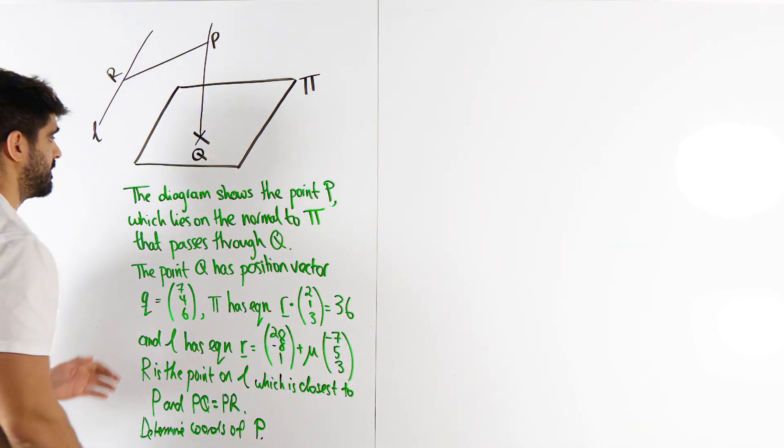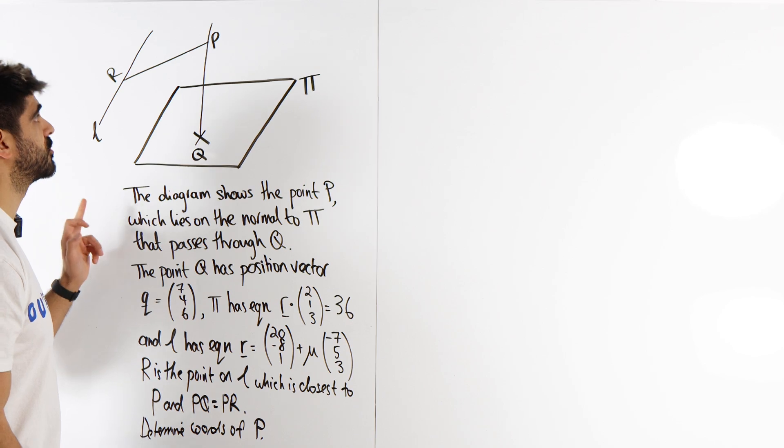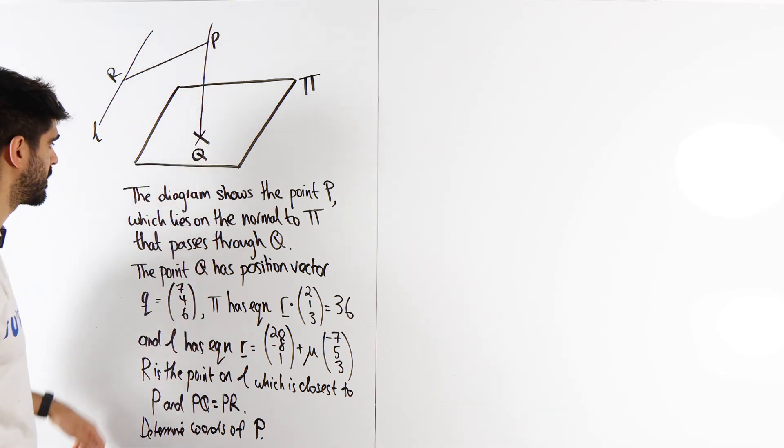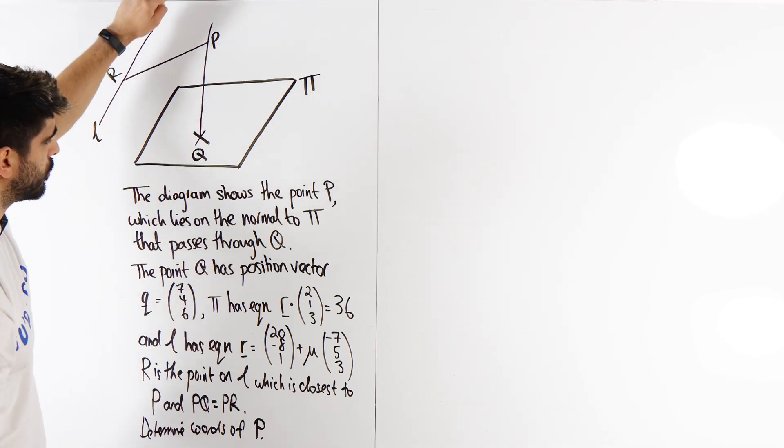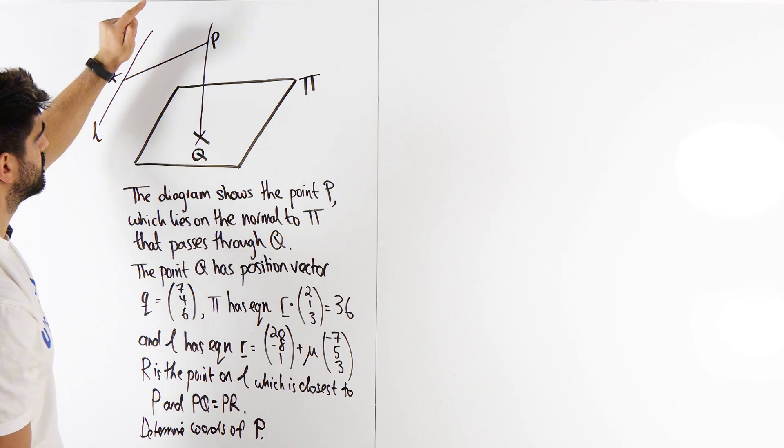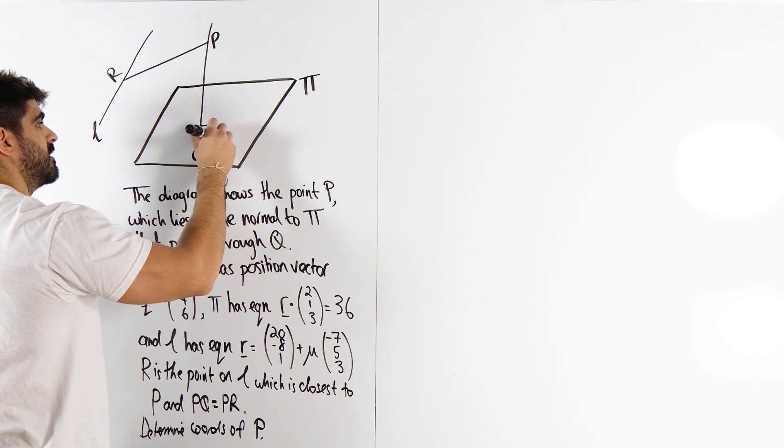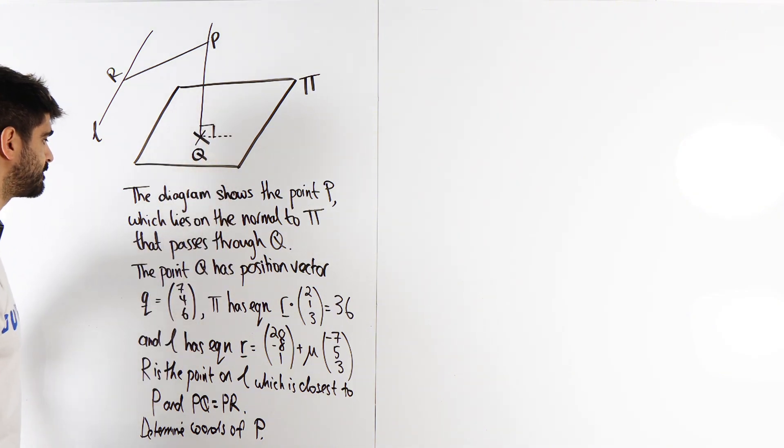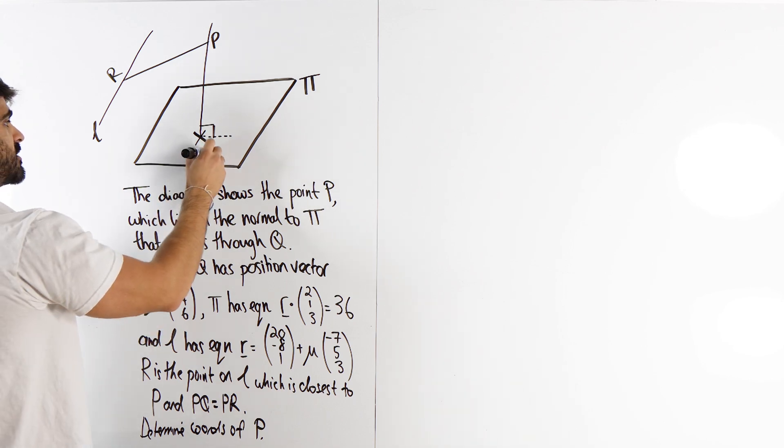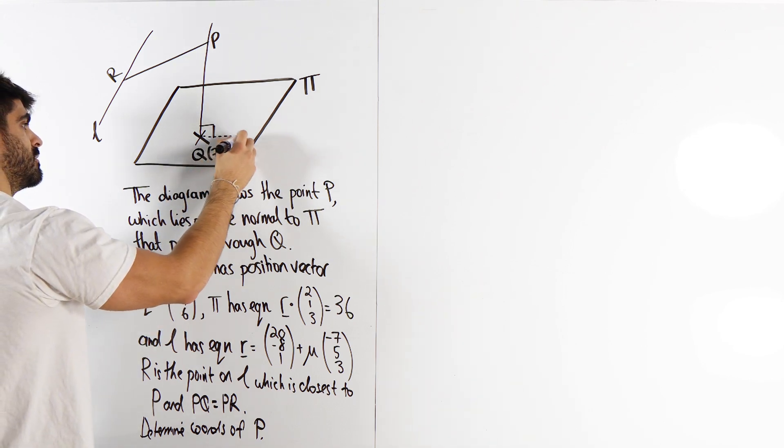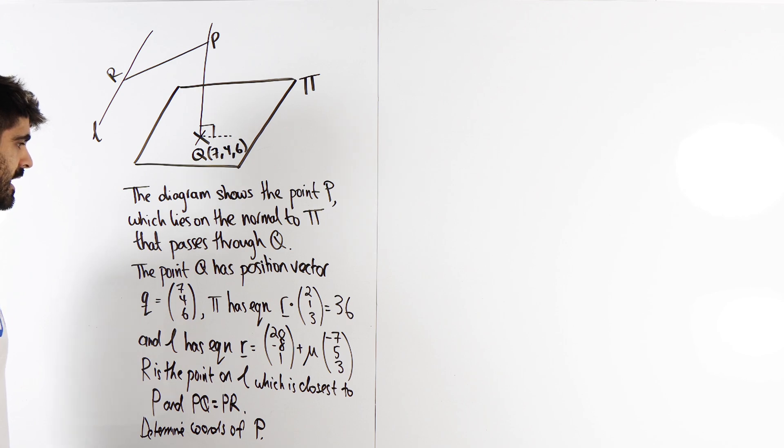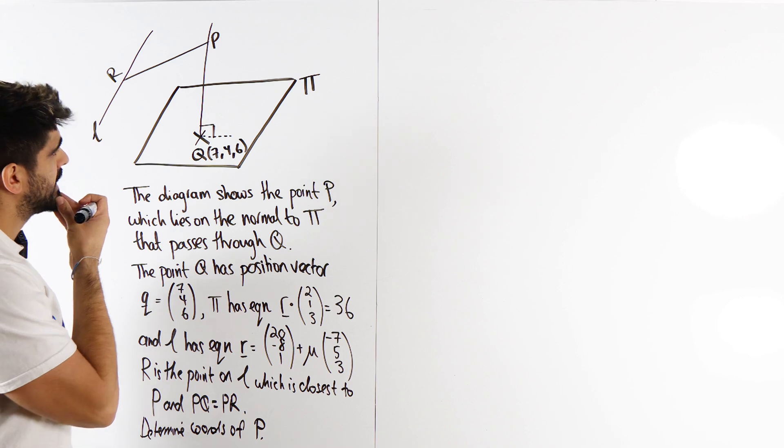Alright, so let's just read it again. The diagram shows the point P over here, which lies on the normal to pi, so basically this line here is normal, perpendicular to my plane, and it passed through Q, and Q is 7, 4, 6, and pi has equation R dot 2, 1, 3 equals 36.